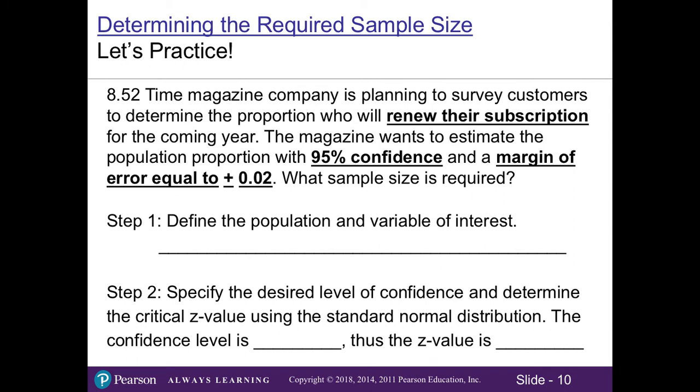Now let's go ahead and do problem 52 in our textbook. Time Magazine Company is planning to survey customers to determine the proportion who will renew their subscription for the coming year. The magazine wants to estimate the population proportion with 95% confidence and a margin of error equal to plus or minus 0.02. In other words, 2%. What sample size is required? Now here we have a nice story, so let's make sure we understand our population and our variable of interest. In this case, we want to know who's going to renew their subscription, meaning these are current magazine subscribers.